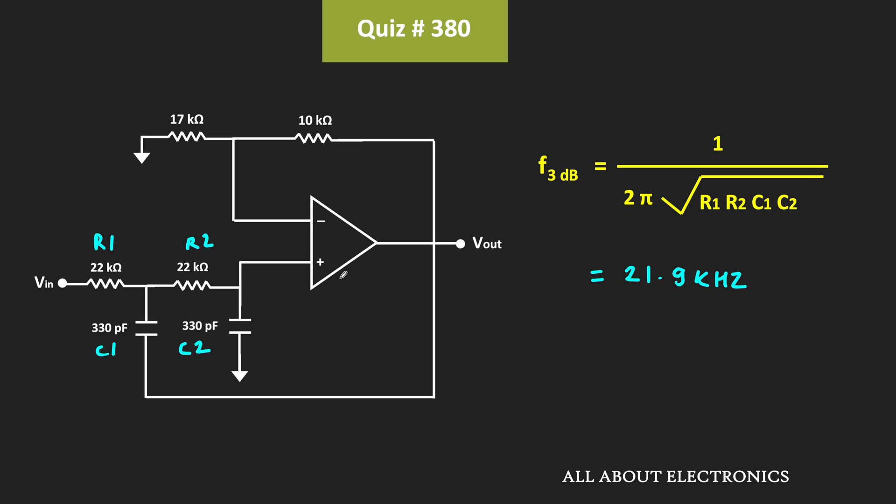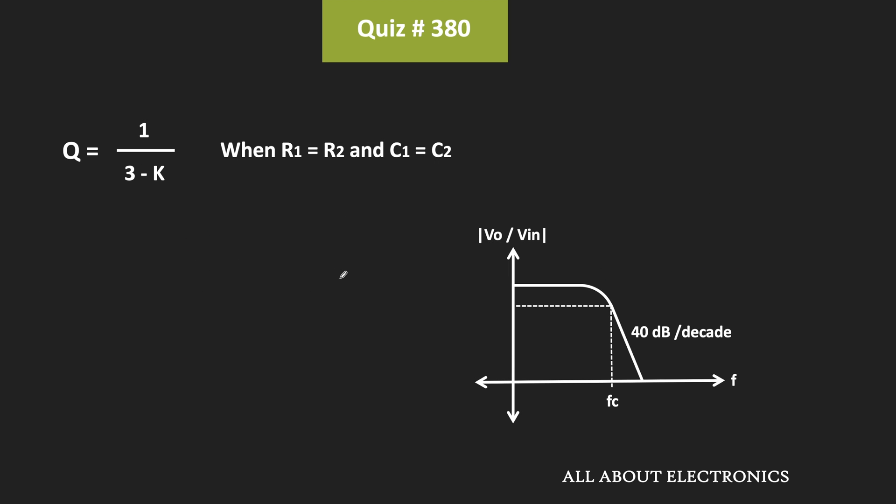For the non-inverting configuration, we know that the gain can be given as 1 plus Rf divided by R. Here, Rf equals 10 kΩ and R equals 17 kΩ, which means the gain equals 1 plus 10 kΩ divided by 17 kΩ, which equals 1.58.